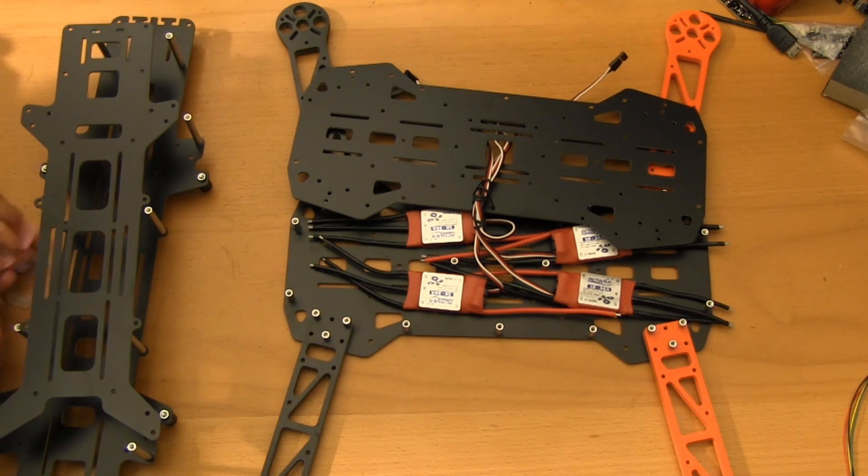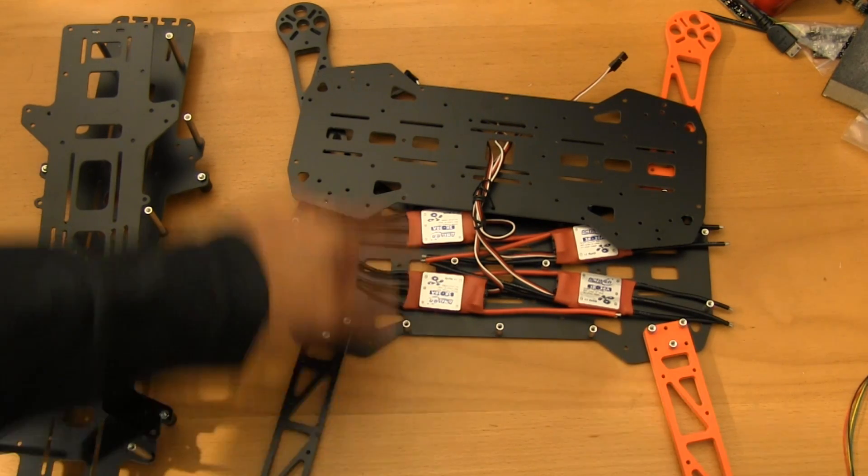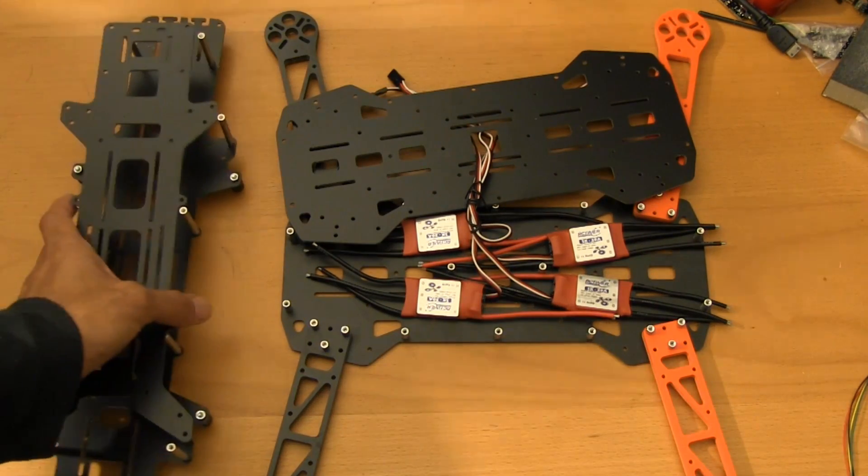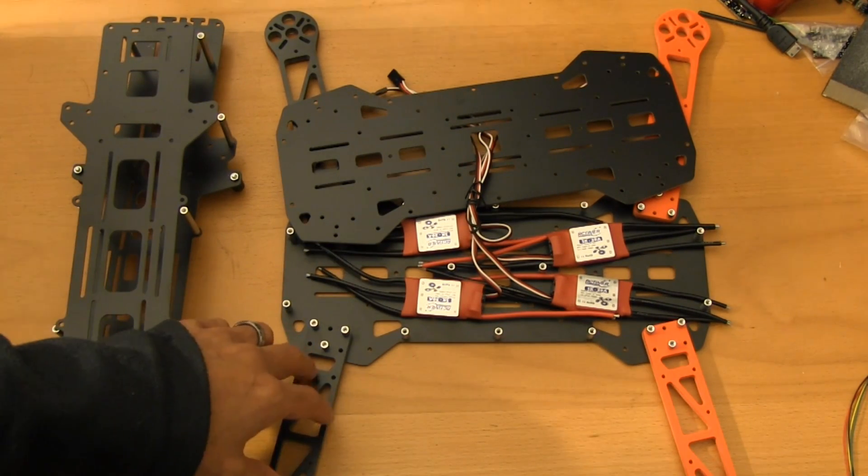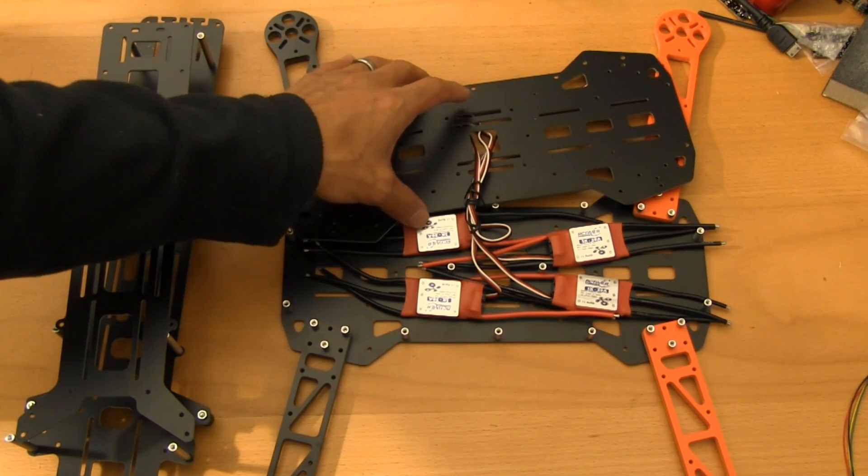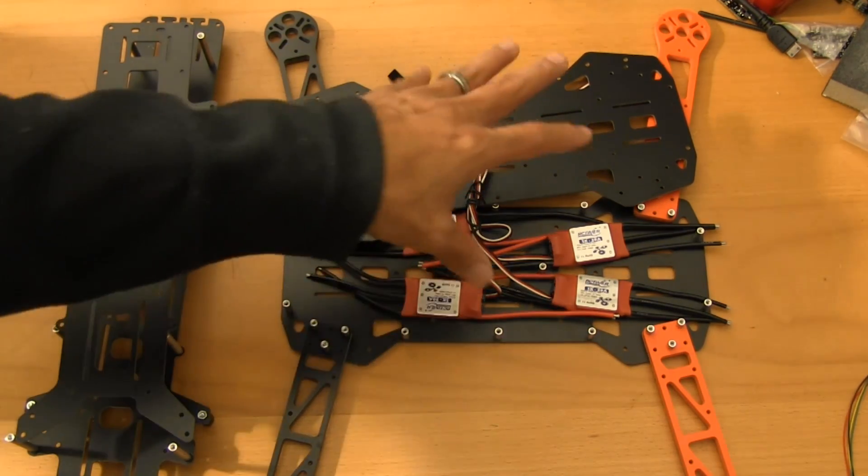A couple things I wanted to point out: just make sure that you're remembering to thread lock all of the button head screws. I'm using blue thread lock, which is semi-permanent. It's more than enough to keep the screws from backing out, and that's especially the case on the dirty plate.